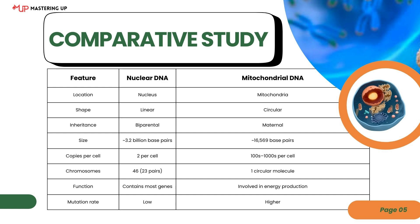Now let's compare nuclear DNA and mitochondrial DNA side by side to get a better understanding of how they differ. Each of these features tells us something unique about their structure, function, and inheritance. Starting with location: nuclear DNA is found inside the nucleus of the cell, which is like the command center where most of our genetic information is stored and protected. Mitochondrial DNA, on the other hand, is located in the mitochondria, which are spread throughout the cell and are responsible for generating the energy the cell needs. Next is shape: nuclear DNA is linear, existing in long thread-like structures organized into chromosomes, while mitochondrial DNA is circular — it forms a loop more similar to bacterial DNA. This difference in shape actually reflects their evolutionary history, as mitochondria are thought to have originated from ancient bacteria.